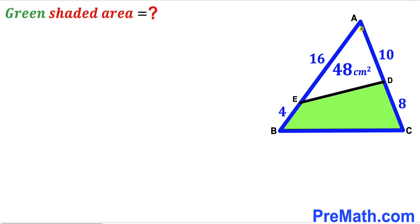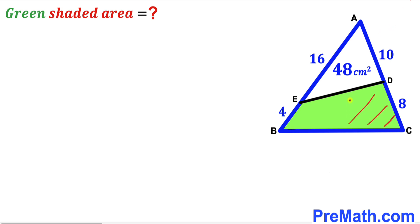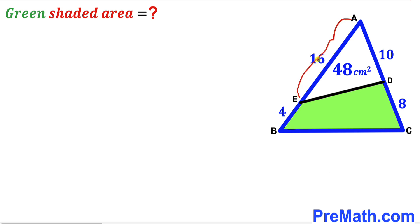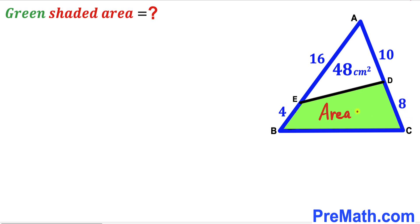Welcome to PreMath. In this video we have triangle ABC along with segment ED, resulting in a green shaded quadrilateral. The area of triangle ADE is given as 48 centimeters square. Segment AE is 16, segment AD is 10, segment BE is 4, and segment CD is 8 units. Our task is to calculate the area of the green shaded region.